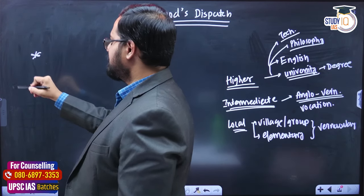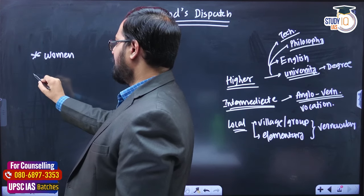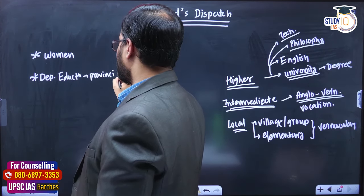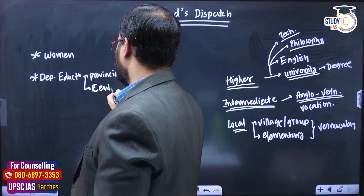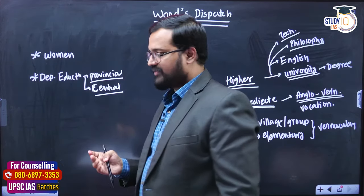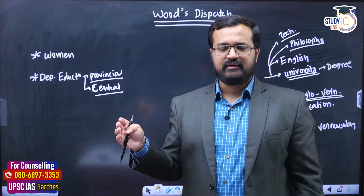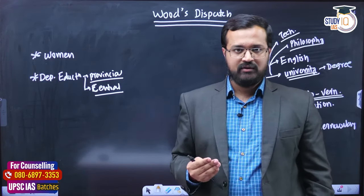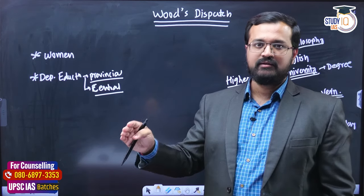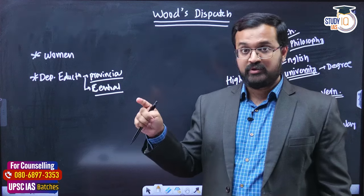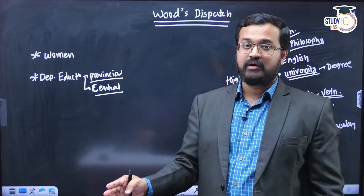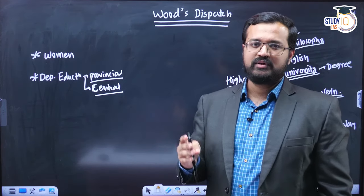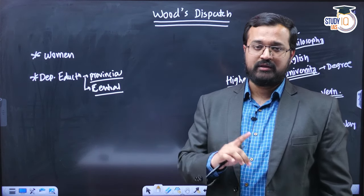Woods Dispatch also emphasized women's education and creating a Department of Education at both provincial and central levels to earmark and monitor growth of this scheme. A separate Director of Public Instruction position was also to be appointed. Lord Dalhousie is credited with interest in education of ordinary people - not because he wanted to do something good for India, but because he wanted to create a good market for British products. Western education would develop Western taste in Indians, creating demand for imported, British-manufactured goods.